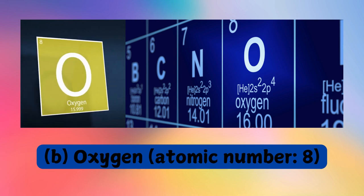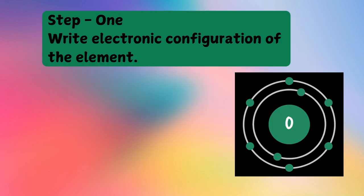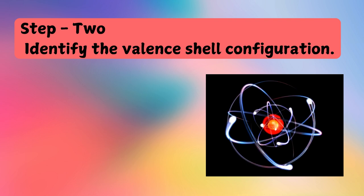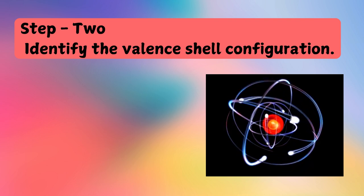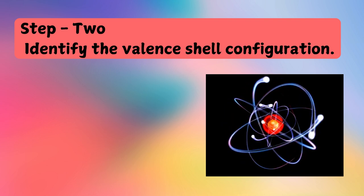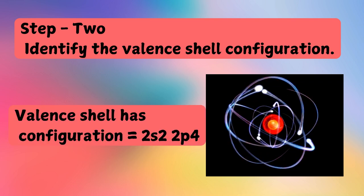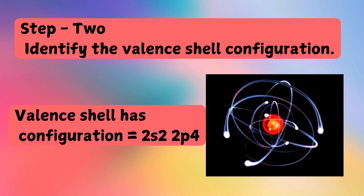Oxygen, atomic number 8. Step number 1: Write the electronic configuration of the element. The electronic configuration of oxygen is 1s²2s²2p⁴. Step number 2: Identify the valence shell configuration. The valence shell configuration equals 2s²2p⁴.